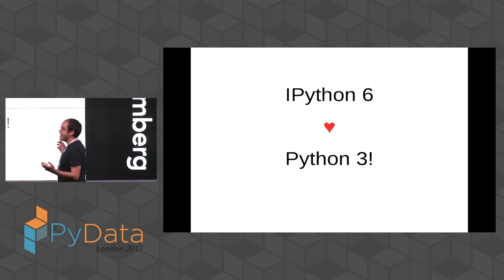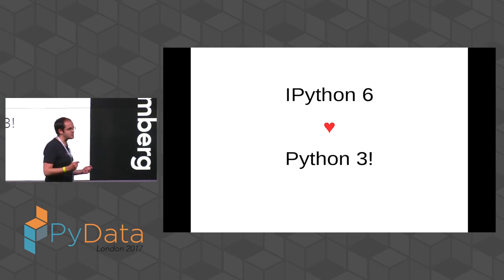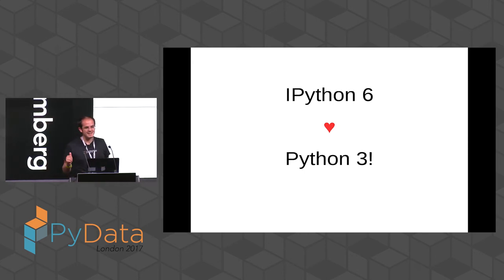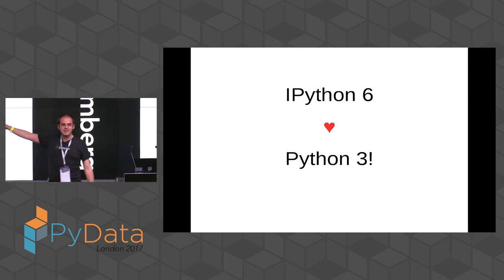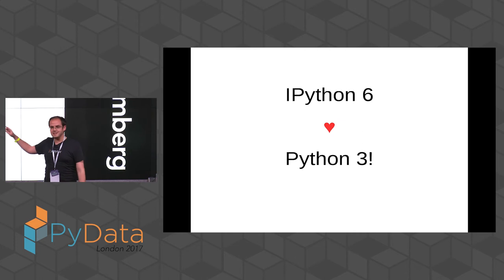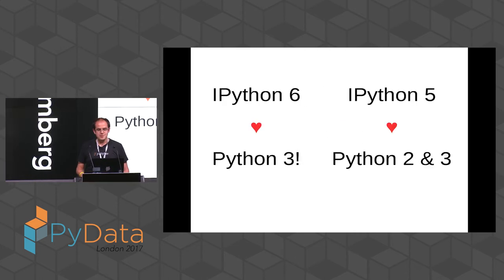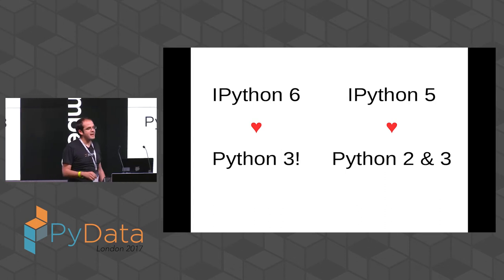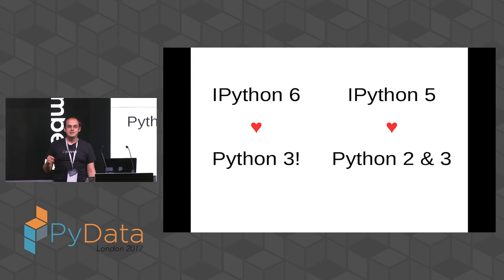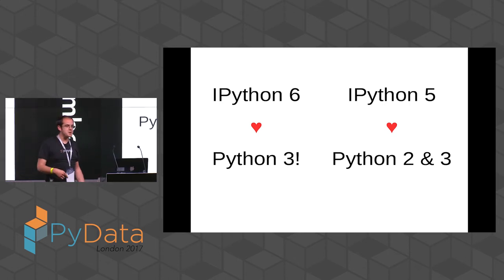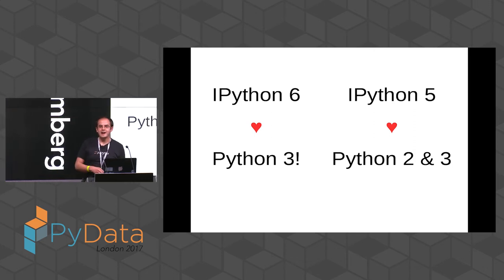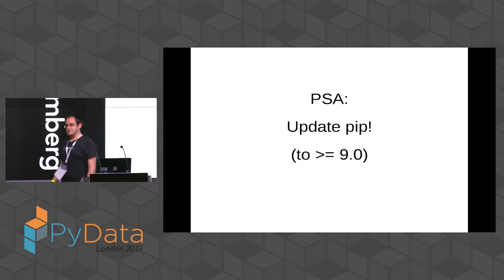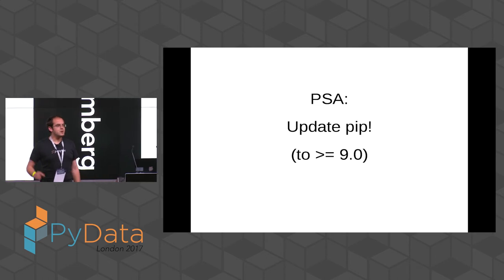Last year at PyData London, I managed to pack two lightning talks into my one slot, and I thought that was kind of fun, so I'm going to try and make it my thing. Two lightning talks for the price of one. Lightning talk number one: we recently released IPython version six. IPython version six requires Python three. If you're still using Python two, don't panic — IPython version five will continue to get bug fix releases and does support Python two. However, if you're using an old version of pip and you do pip install ipython on Python two, it will try and get the newest version, and you'll get an error saying this version of IPython is not compatible with Python two. So ladies and gentlemen, this is a public service announcement: keep your version of pip up to date.